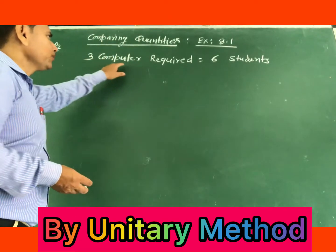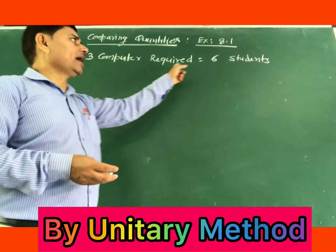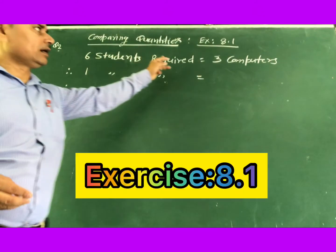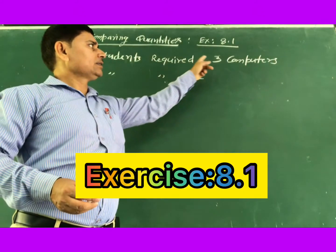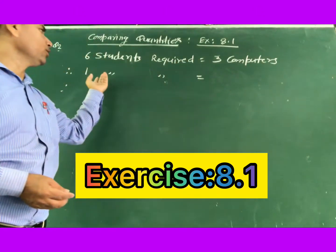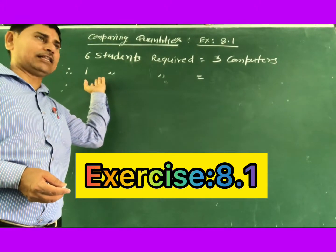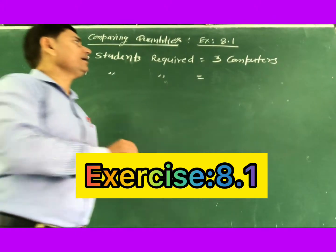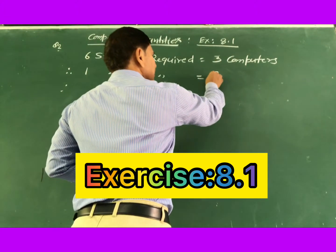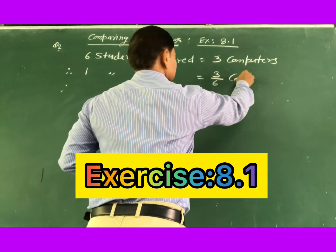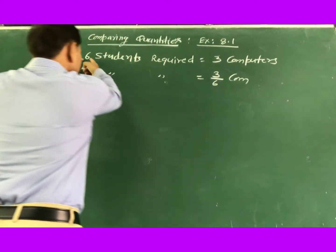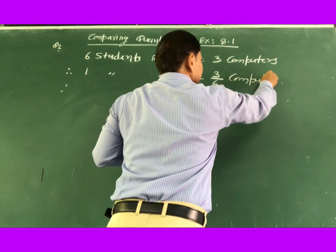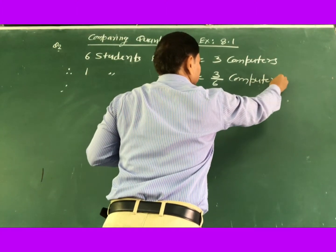So here, 3 computers are required for 6 students. Therefore, we will use the unitary method. That is, 1 student requires 3/6 computers. This 6 comes into the denominator, so you will get 1/2 computer per student.